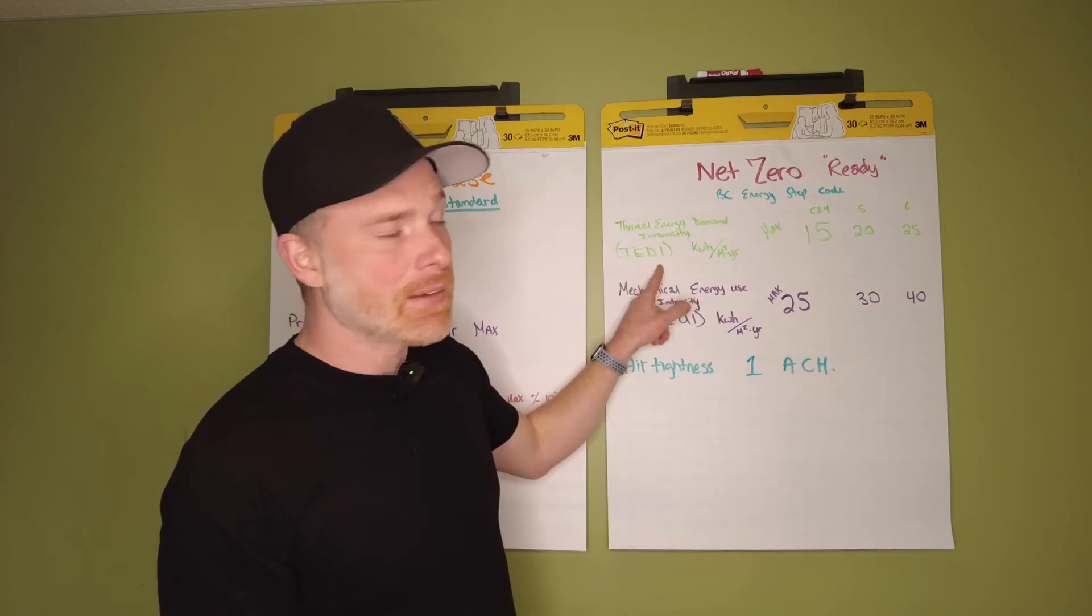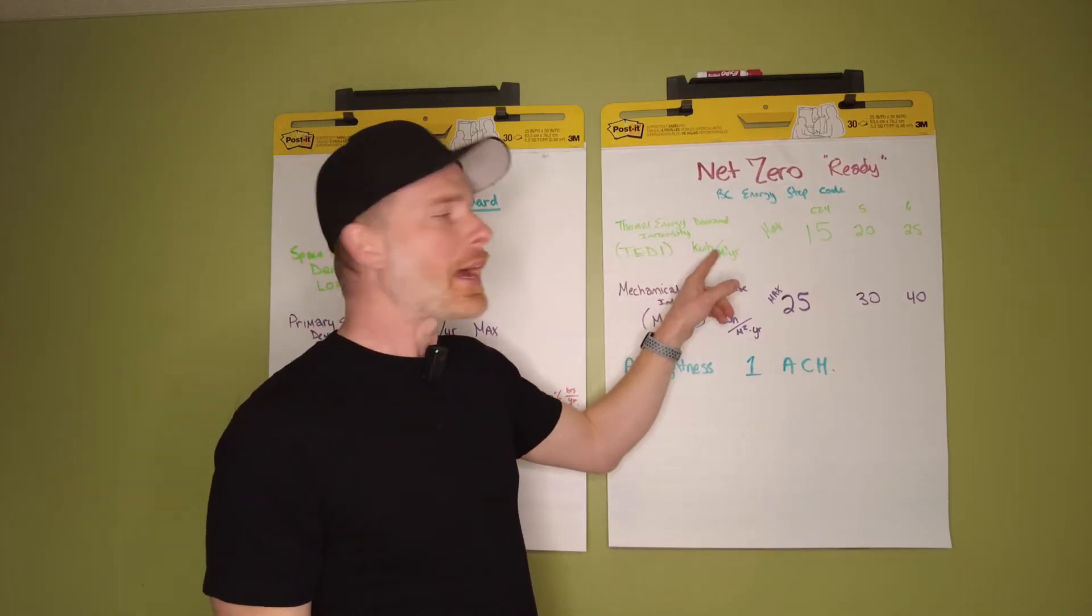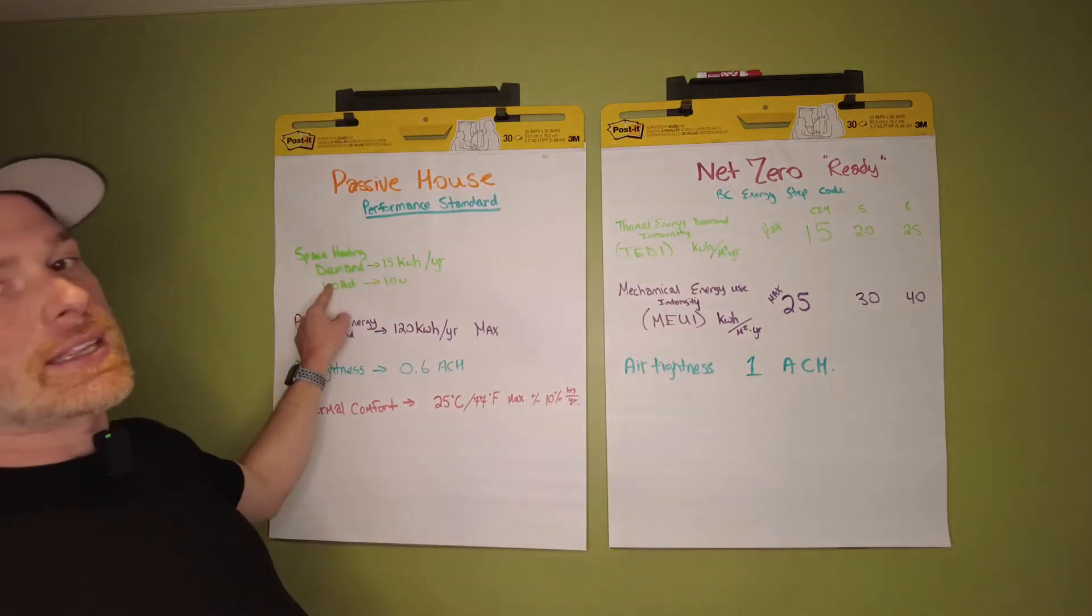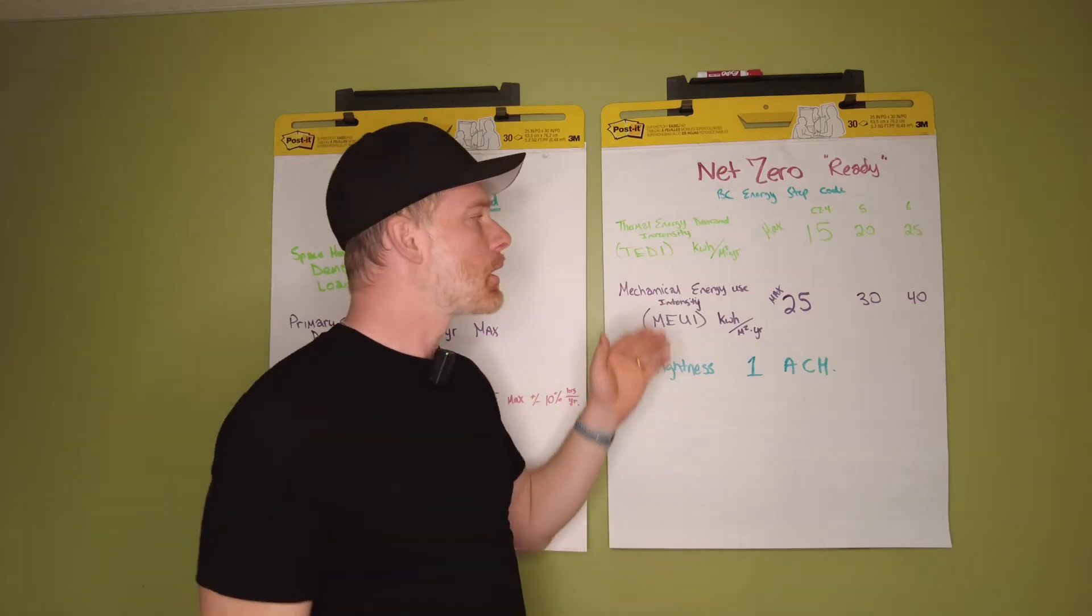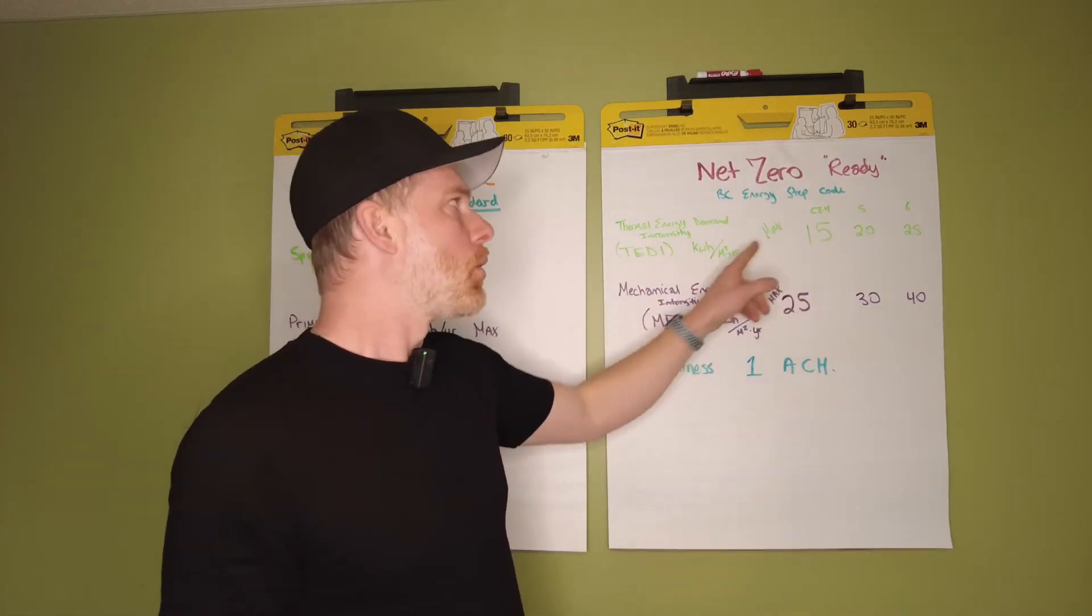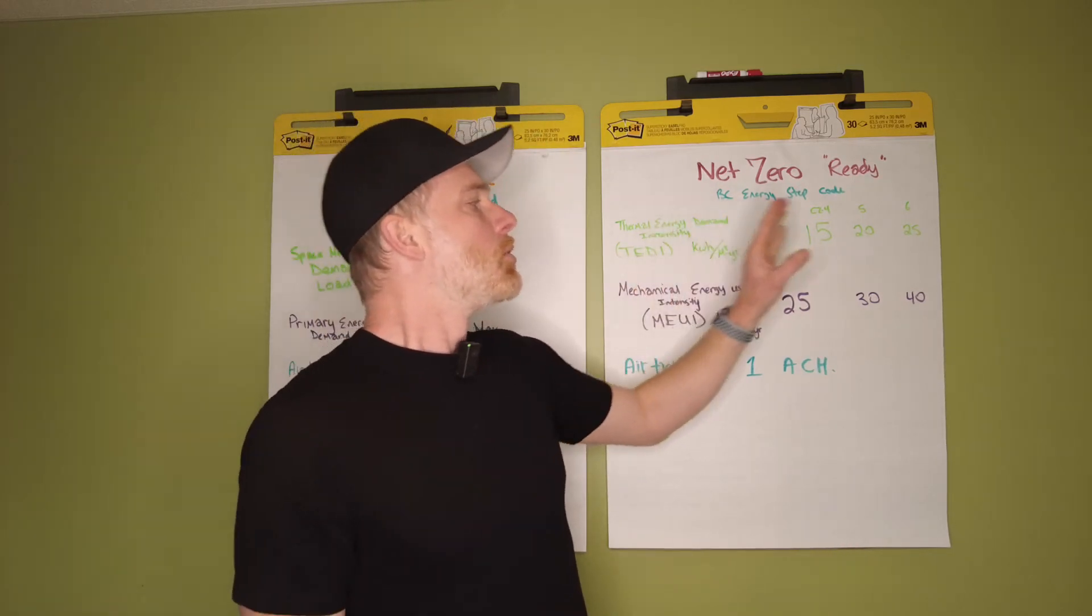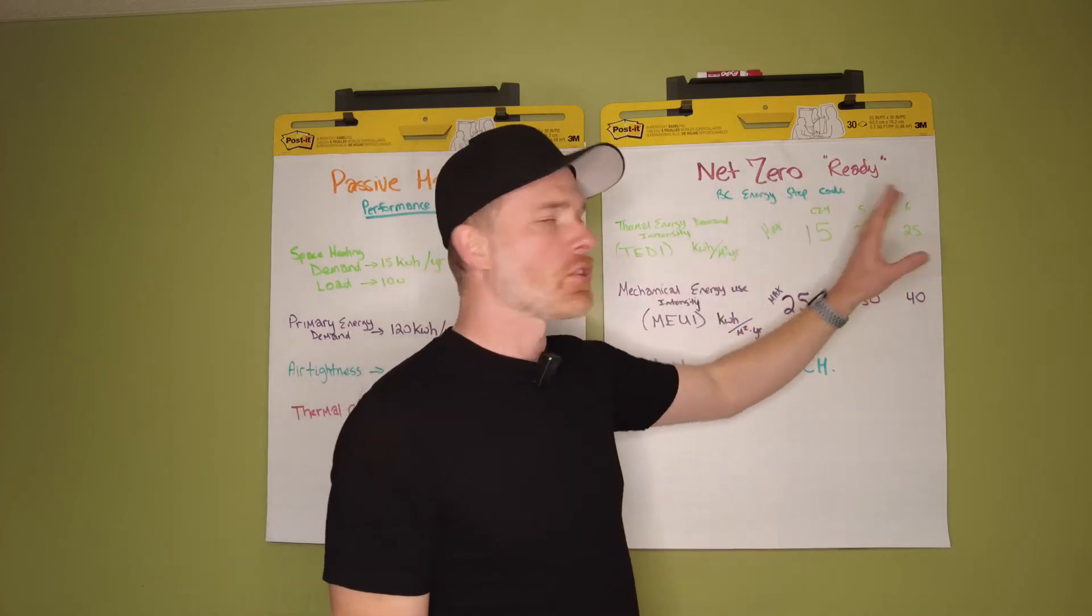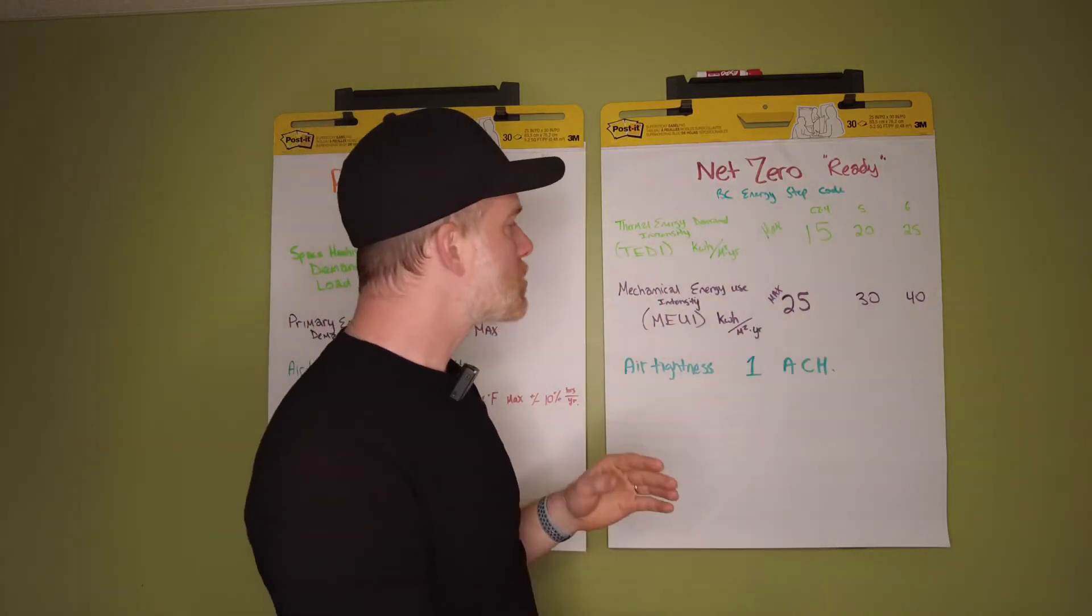They talk about TEDI, which is Thermal Energy Demand Intensity, measured in kilowatt hours per meter squared per year, just like the heating demand for Passive House. They've broken it up over climate zones. If you're in Vancouver, it's 15 kilowatt hours per meter squared per year. Move to Kelowna, you're at 20. Move up to Prince George, you're at 25. So there's a bit of flexibility in the range.